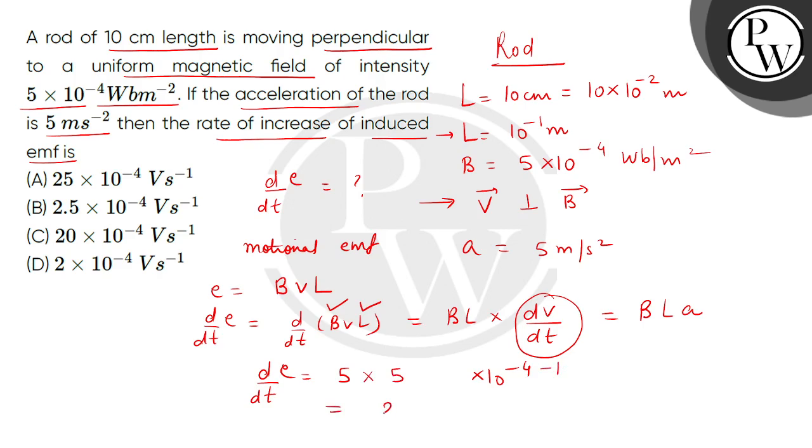So the answer will be 25 × 10^-5 volt per second, which means 2.5 × 10^-4 volt per second, so the correct answer is option B. Thank you.